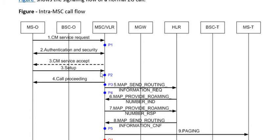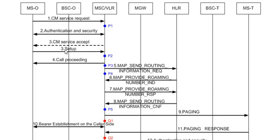Once the authentication and security procedures are successful, the CM Service Request is accepted by the MSC. As a consequence, a Setup message is originated from the originating MS to the MSC. It is important to note that here we are discussing only the DTAP messages — the Direct Transfer Application Protocol.